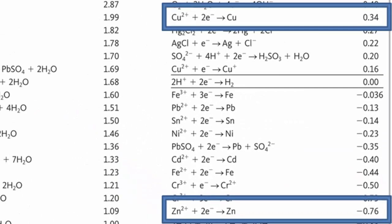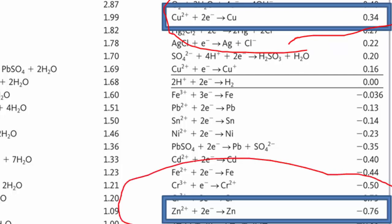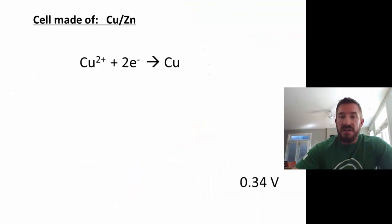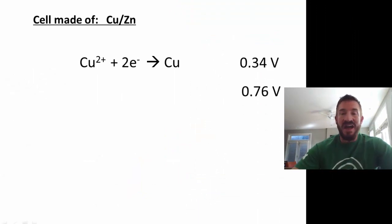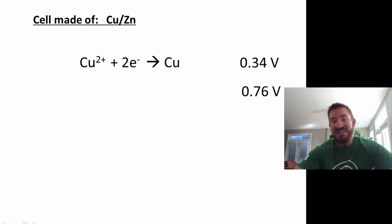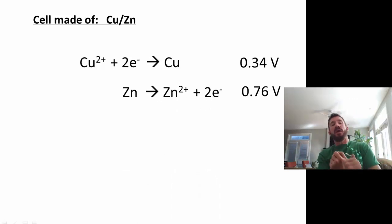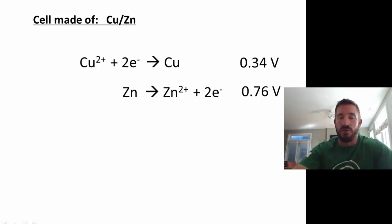The one that is the most positive always occurs as reduction. So the copper will be a reduction, and we'll write it just as we see right here. And the zinc will be written in reverse, and that occurs as an oxidation. So what's going to happen is we're going to make the negative 0.76 a positive 0.76. Remember, you have to have one reduction, one oxidation. You can't have two reductions or two oxidations.